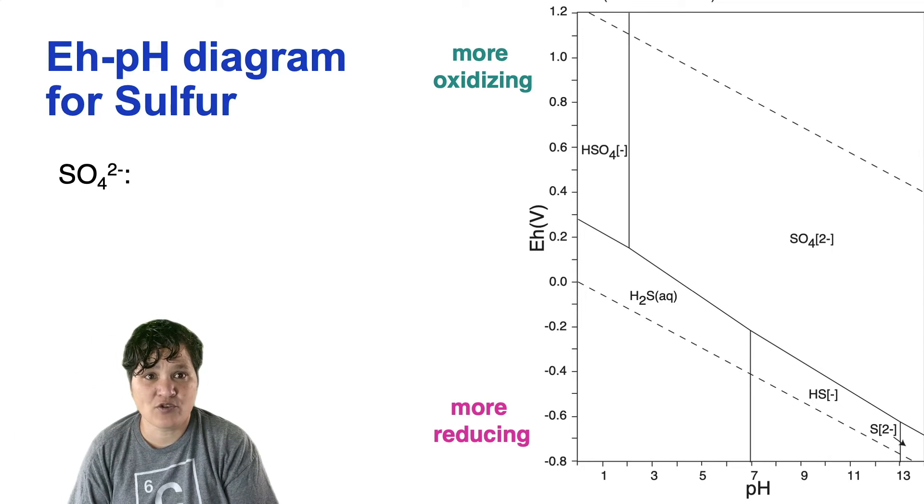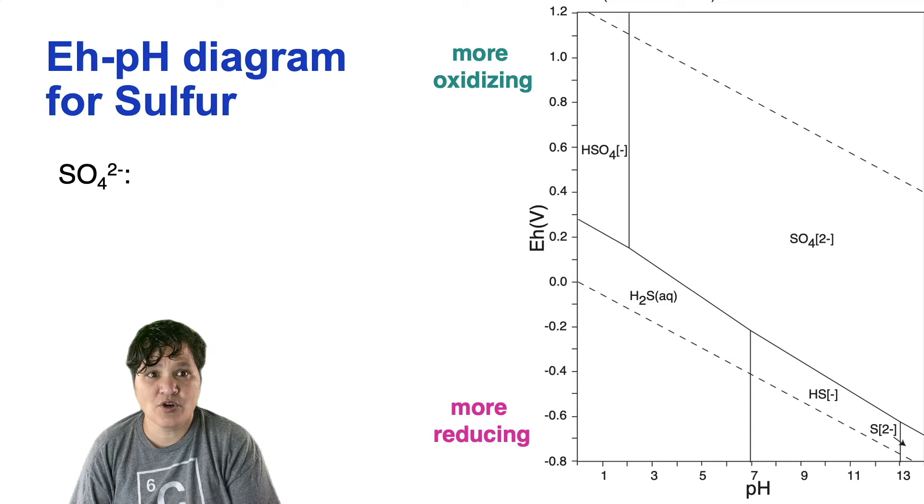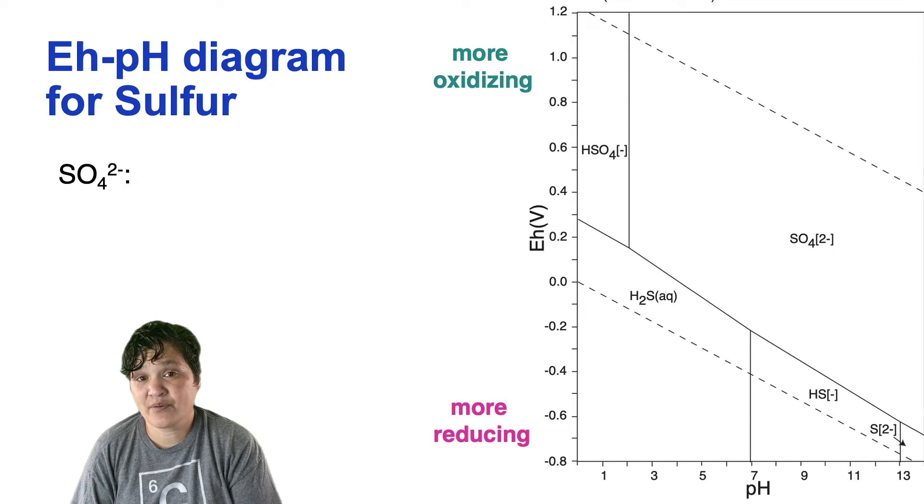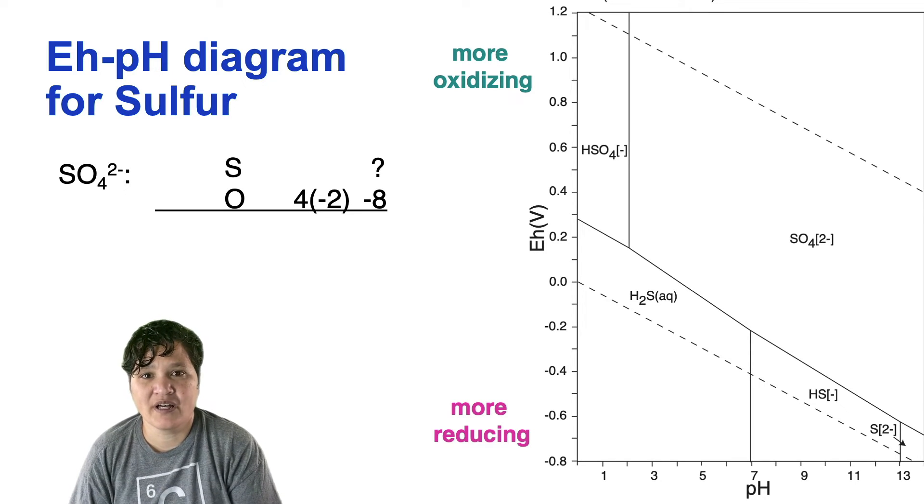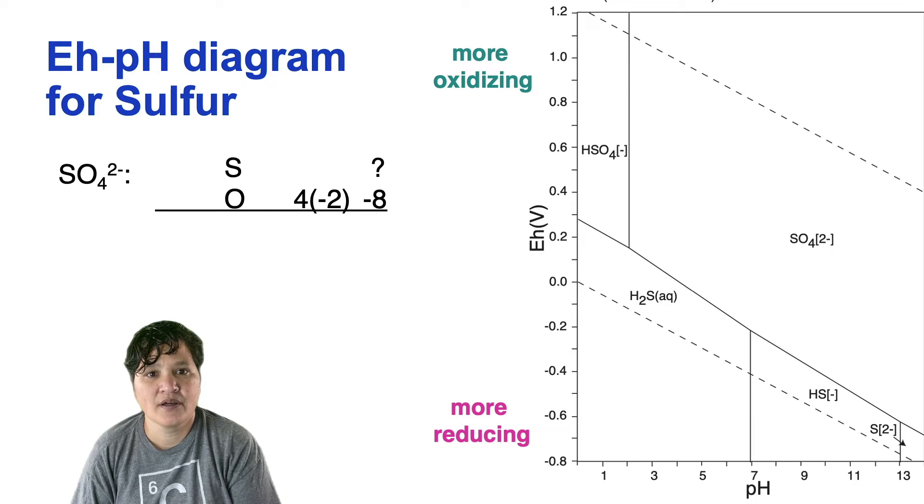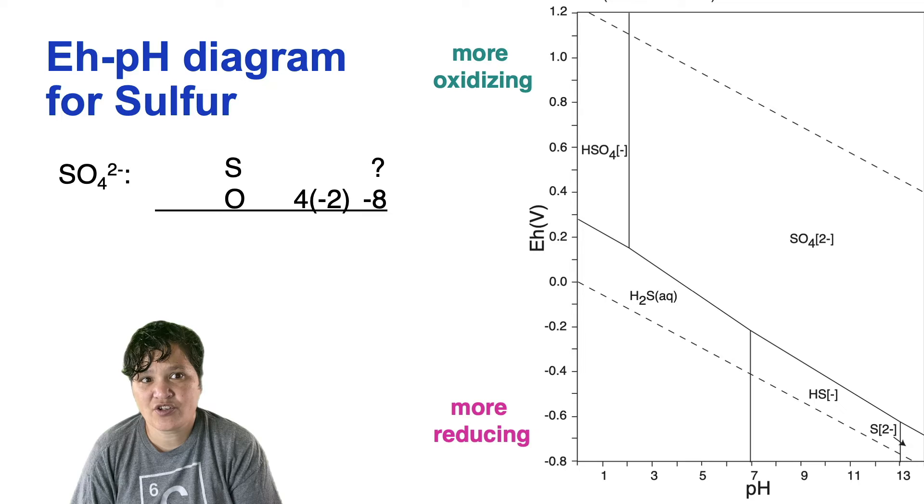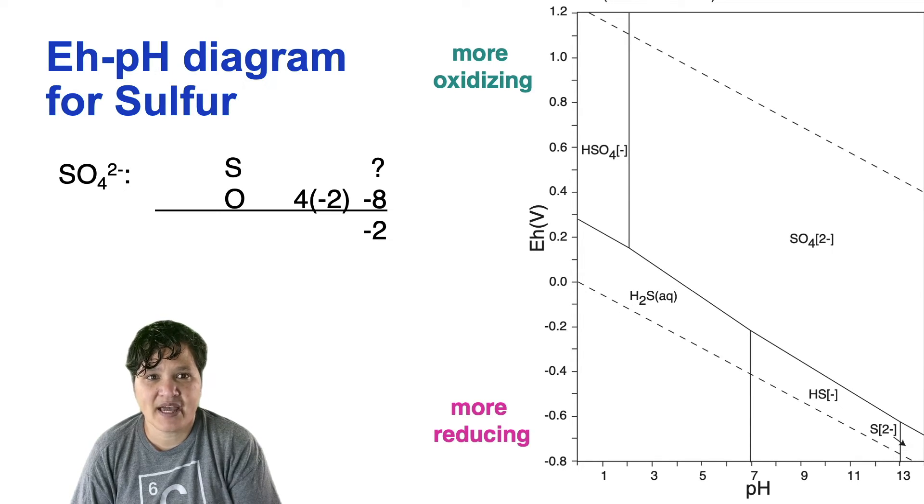I'm going to start with sulfate SO42-. We don't know what the oxidation number of sulfur is, but oxidation numbers tell us that the oxidation of each of the molecule must be equal to the charge on the molecule minus 2. So the oxidation number of sulfur has to be something that, when added to minus 8, gives us minus 2, and therefore it has to be plus 6. You can do a similar calculation for the sulfur in HSO4-, and it also gives you a value of plus 6.